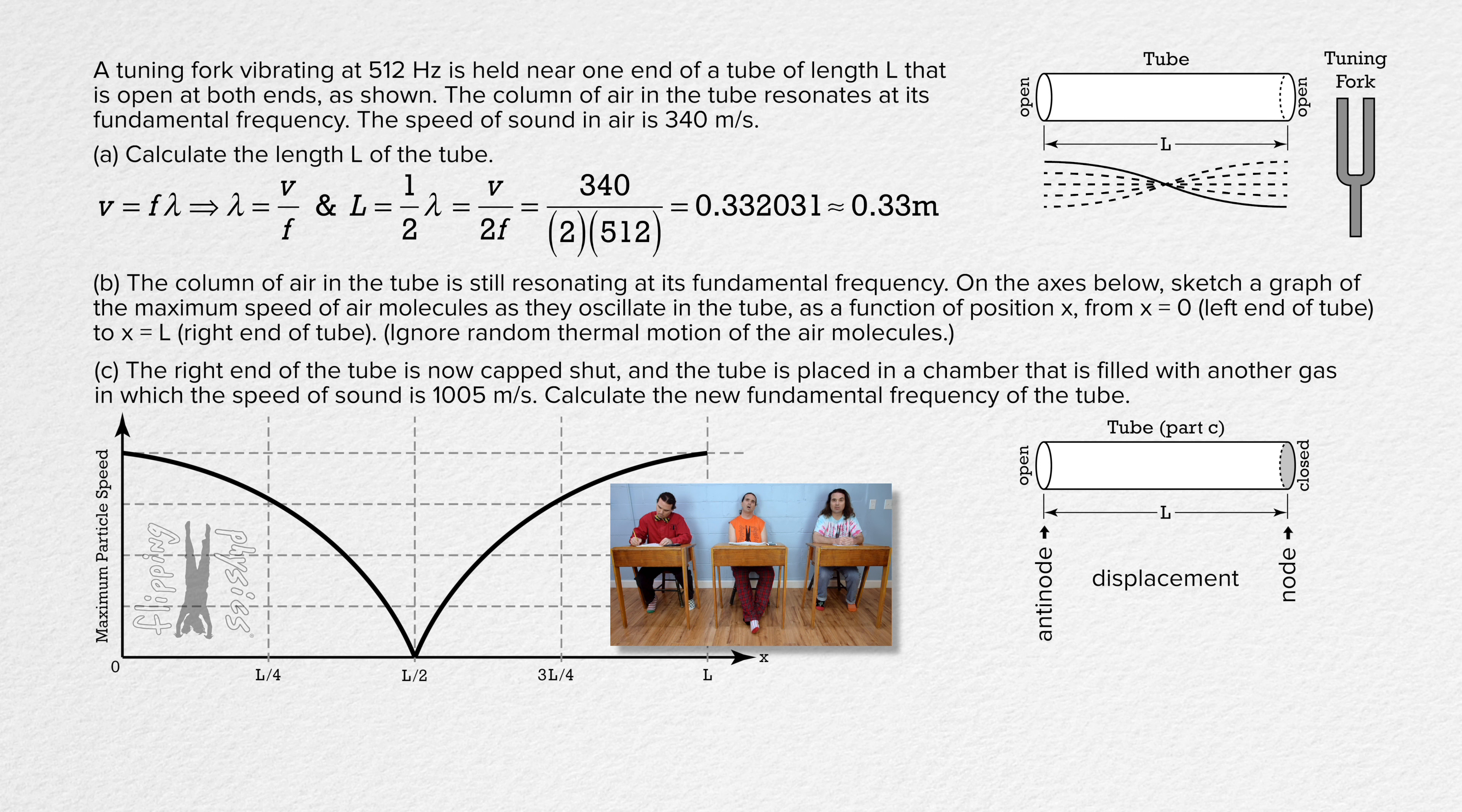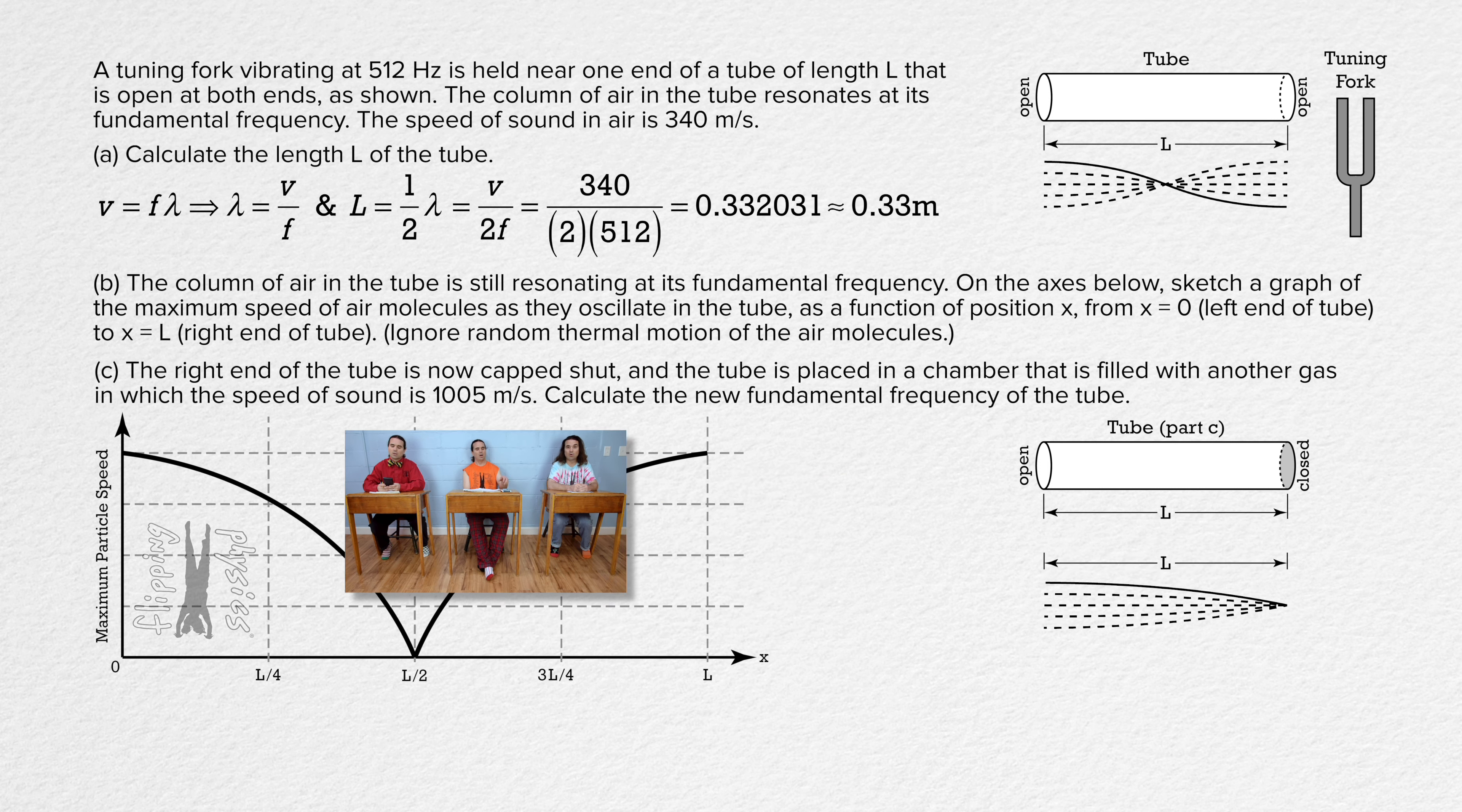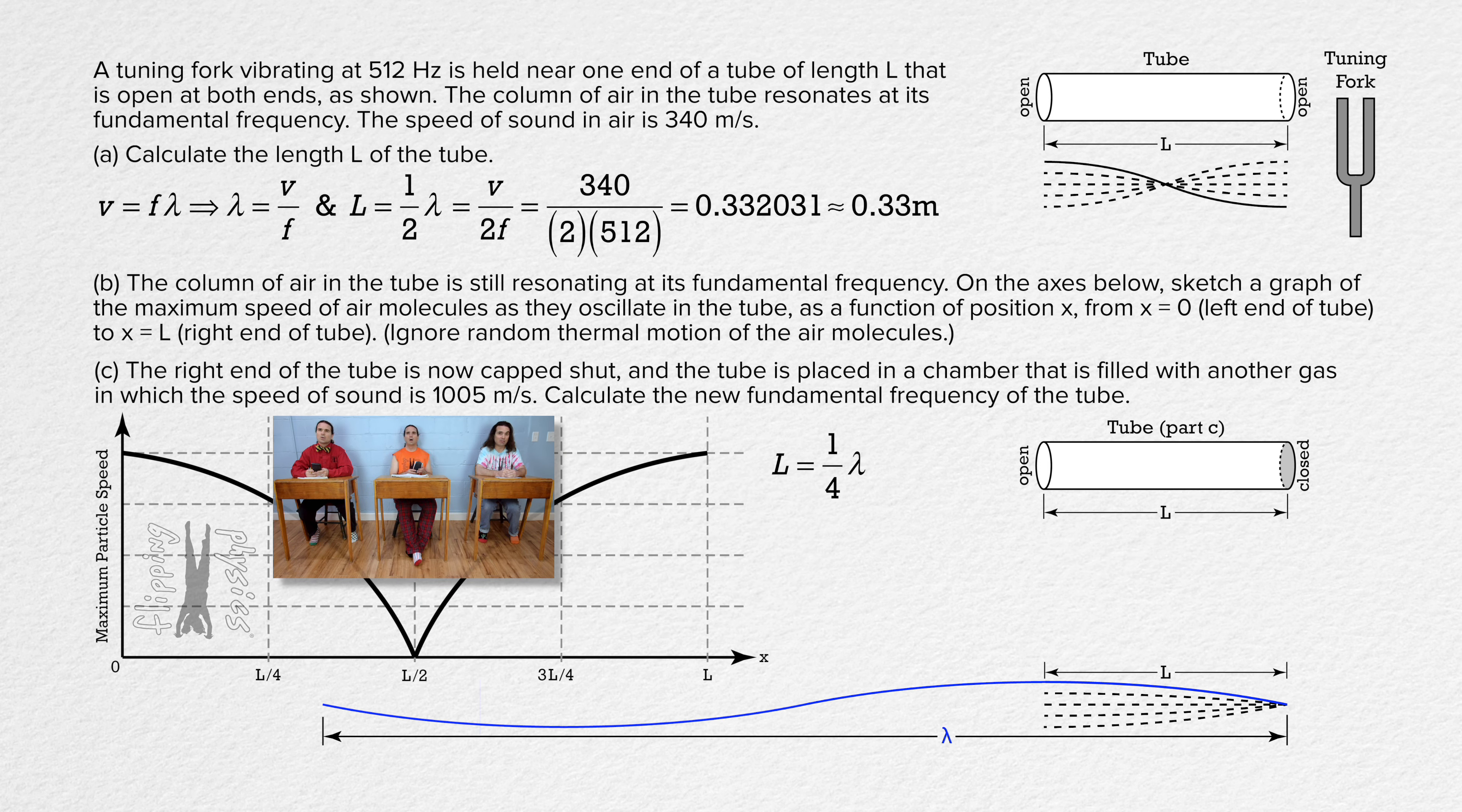Again, when resonating at its fundamental frequency, the standing wave created will have the longest possible wavelength to create a standing wave pattern in the tube. Therefore, there will be no other displacement nodes or antinodes in the tube and the standing wave pattern will look like this. Now, only one quarter of a wavelength fits in the length of the tube, which means the wavelength of the wave equals 4 times L. And we can calculate the new fundamental frequency of the tube using the new speed of sound.